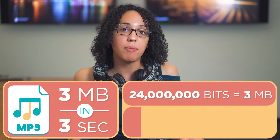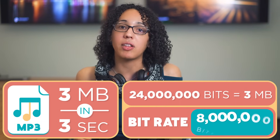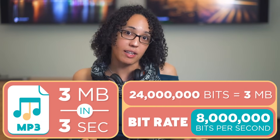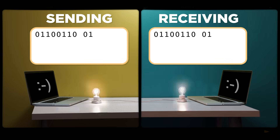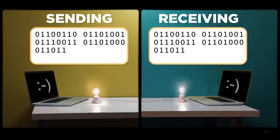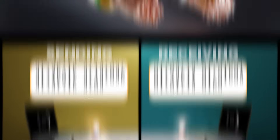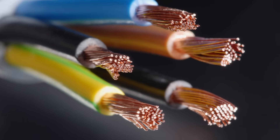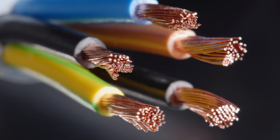In our human analogy, one bit per second was pretty fast but kind of hard for a human to keep up with. If you want to download a three-megabyte song in about three seconds, at eight million bits per megabyte, that means a bit rate of about eight million bits per second. Humans can't send or receive eight million bits per second, but a machine can do that just fine. But there's also a question of what sort of cable to send these messages over and how far the signals can go.